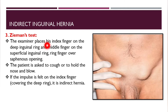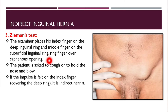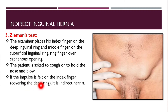The next test is called Zeman's test. The examiner places the index finger on the deep inguinal ring, the middle finger on the superficial inguinal ring, and the ring finger over the saphenous opening. The patient is asked to cough or hold the nose and blow. If the impulse is felt on the index finger, which is covering the deep ring, it is an indirect inguinal hernia.